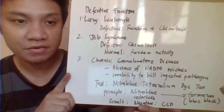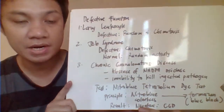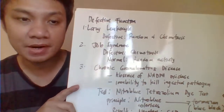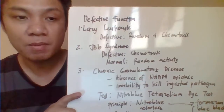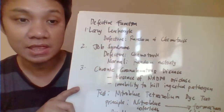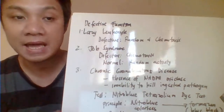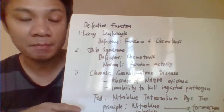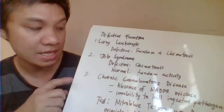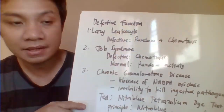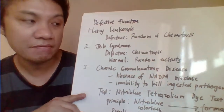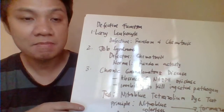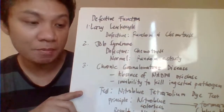Now, abnormality in the function of WBCs. We have Lazy Leukocyte Syndrome, characterized by problems both in the chemotactic activity — the ability to go to the site where there is a pathogen — and also a problem in random motility activity. Job Syndrome, on the other hand, is characterized by defective chemotactic ability or activity, but with normal random activity.